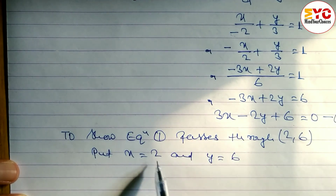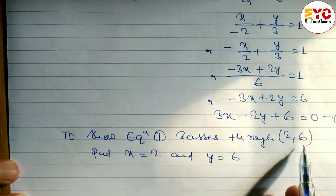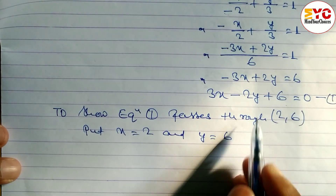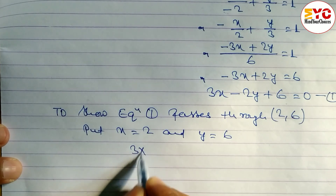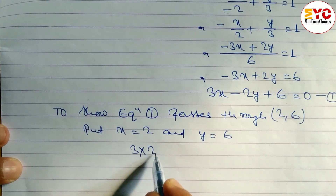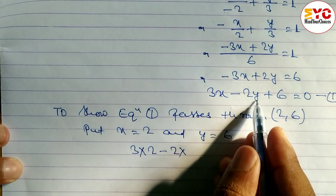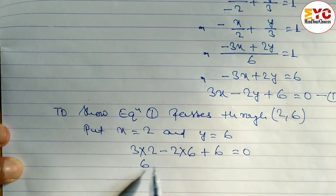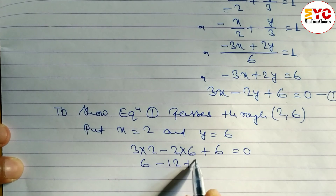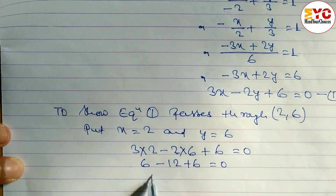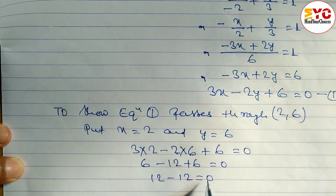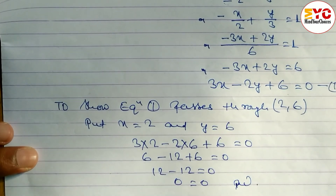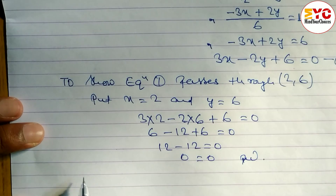In the place of x write 2 and in the place of y write 6. So 3 × 2 − 2 × 6 + 6 = 0 gives 6 − 12 + 6 = 0, which gives 12 − 12 = 0, and we get 0 = 0. Hence proved.